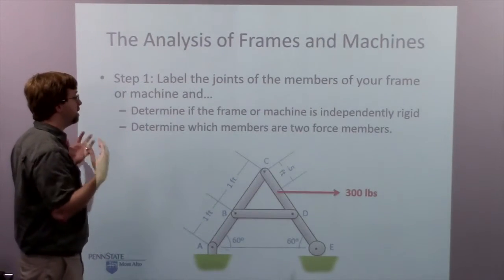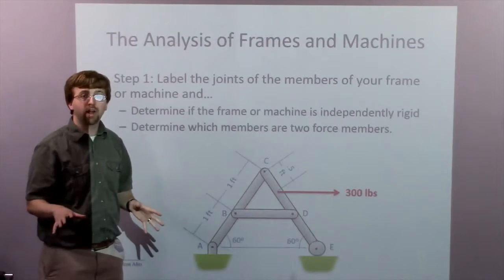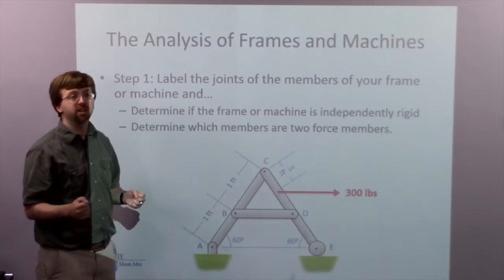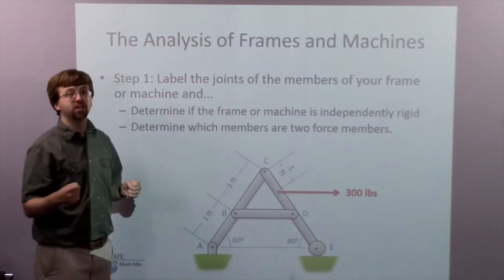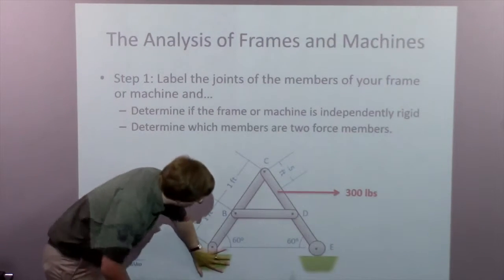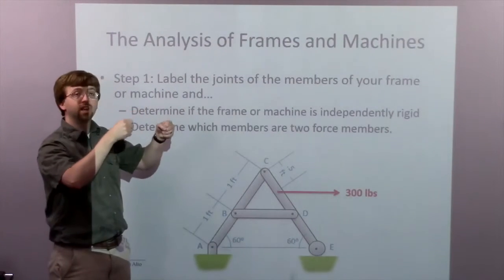The first thing I want to look for: I'm going to look to see if this is independently rigid. And what that means is if I separate it from the ground, is it still rigid? So no machine is going to be independently rigid because they're not rigid in the first place. And some frames are actually only rigid because they're connected to the ground.